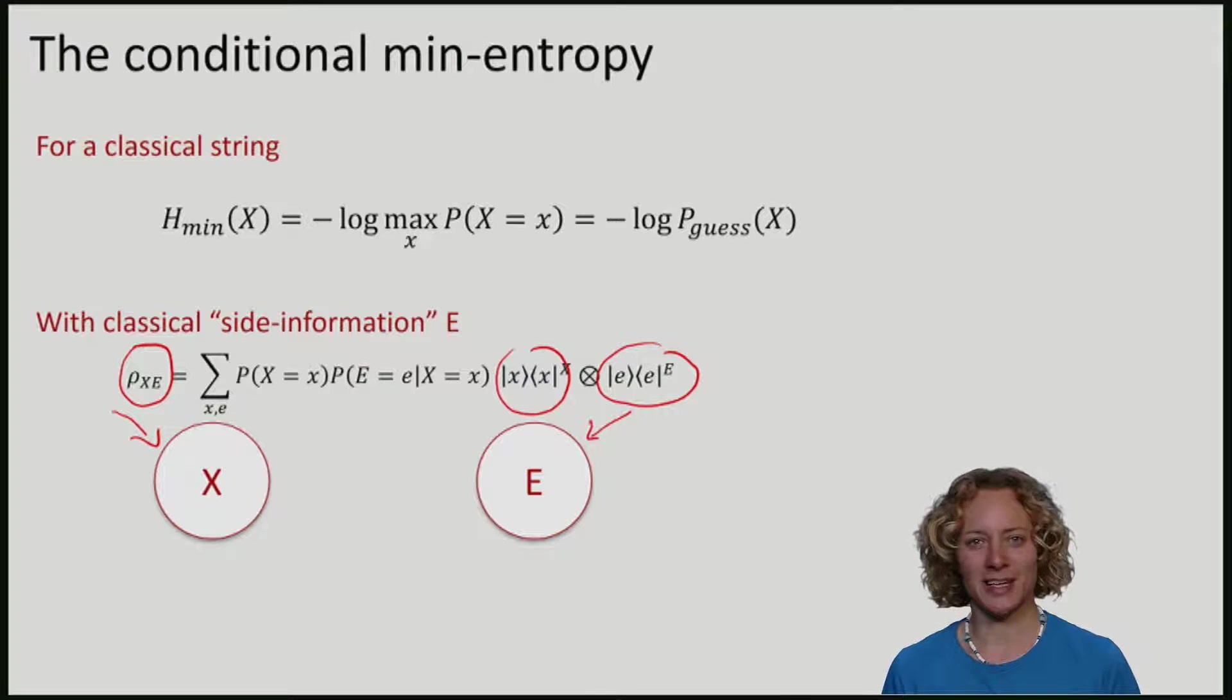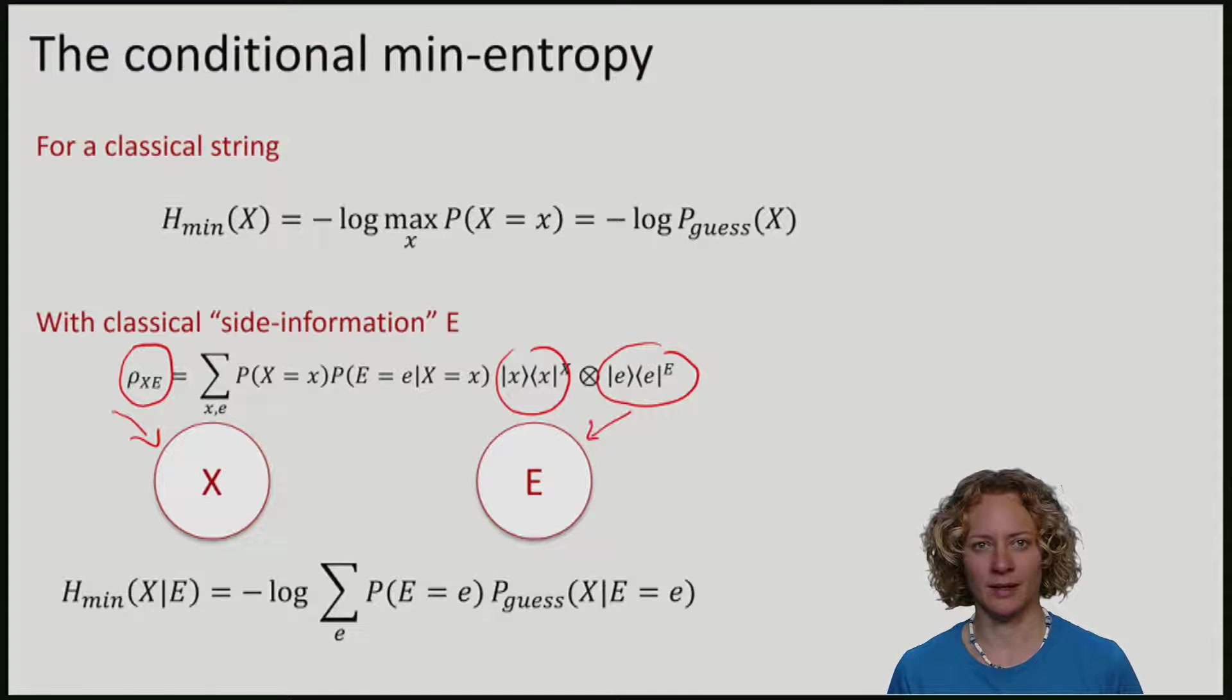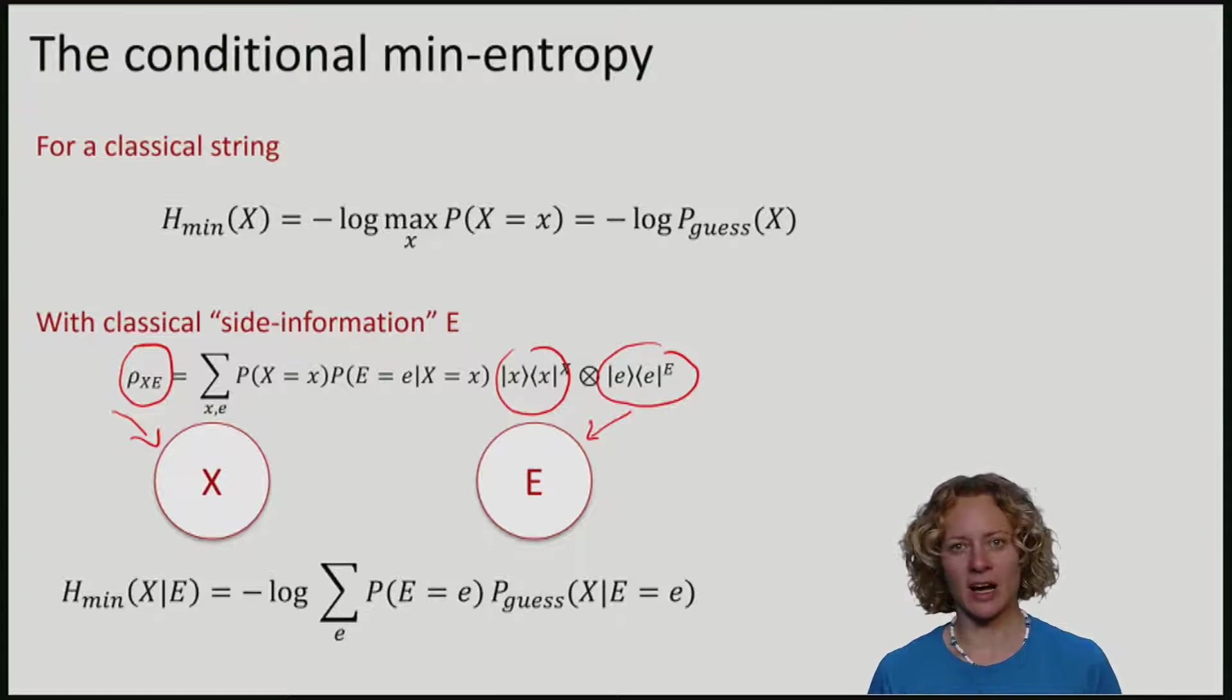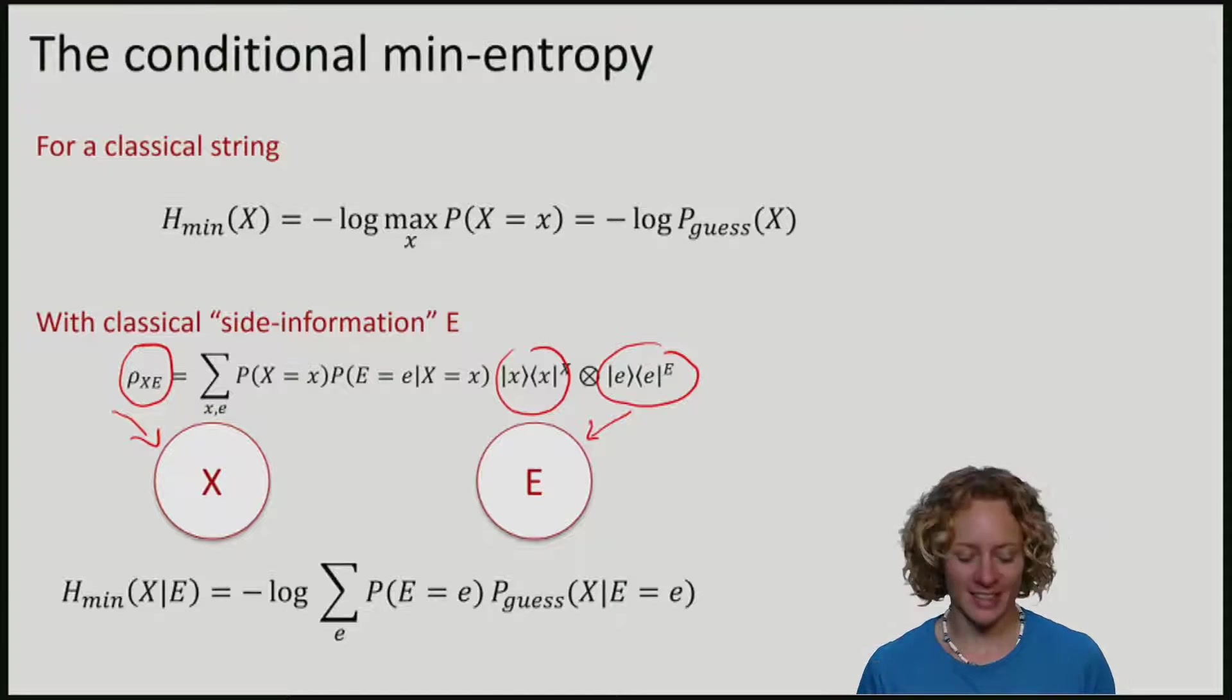The conditional min-entropy is now the min-entropy of x given that I have access to the system e. If you think that the min-entropy quantifies how well I can guess x, it means that I am now interested in the probability of guessing x given that I have e.